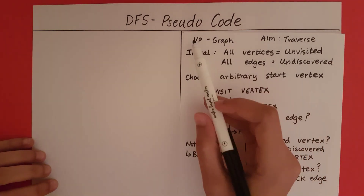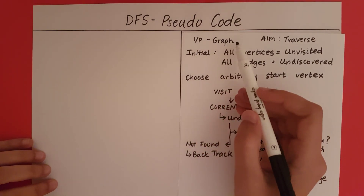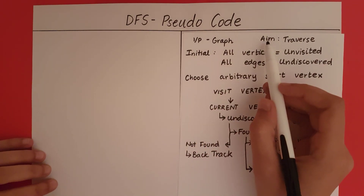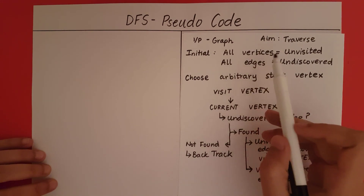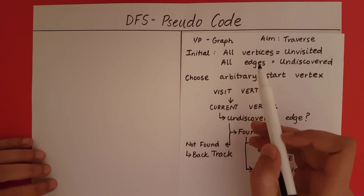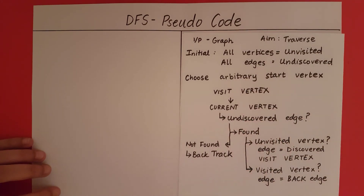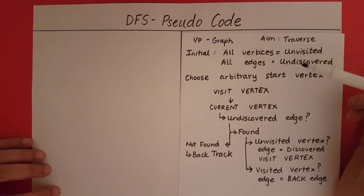The input to the DFS algorithm is a graph. The aim of the DFS is to traverse the graph — that is, to visit all the vertices and all the edges. Initially, before we start the DFS, all the vertices are unvisited and all the edges are undiscovered, because we have not yet started our traversal. These are the initial conditions.